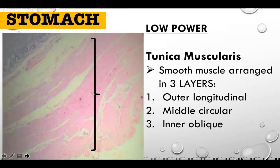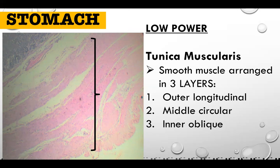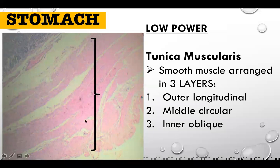In the tunica muscularis of the stomach, unlike the esophagus which has ICOL arrangement, the stomach smooth muscle layers are arranged in three layers: outer longitudinal, middle circular, and inner oblique. The rest of the digestive tract uses inner circular and outer longitudinal. The stomach is the exception. Myenteric or Auerbach's plexus is present in the tunica muscularis, promoting smooth muscle contraction and peristalsis.